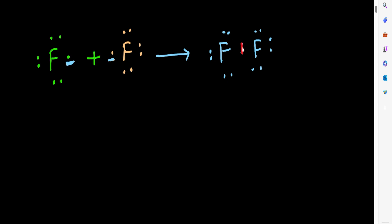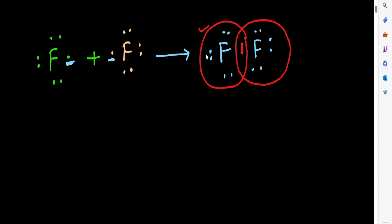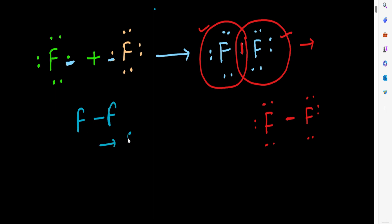This bond is a covalent bond. By sharing two electrons, this fluorine atom achieves octet configuration, and similarly the other fluorine atom also achieves octet configuration. By sharing one electron each, both fluorine atoms get octet configuration. So the F2 molecule is formed by sharing one electron from each atom, resulting in a single covalent bond between the two fluorine atoms.